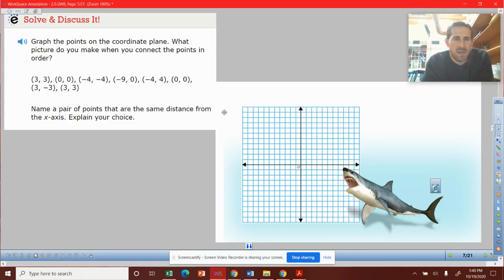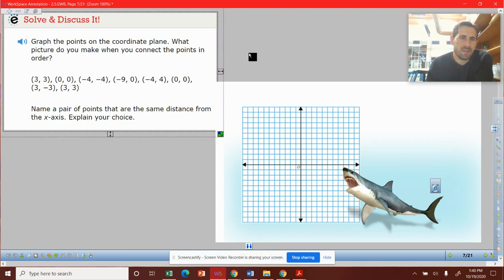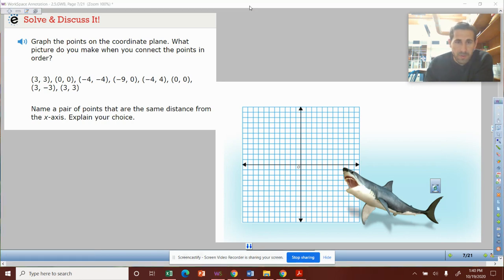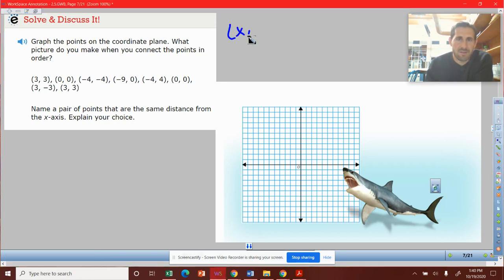It's asking us to graph the points on the coordinate plane. What picture do you make when you connect the points in order? Remember, a point goes X comma Y. X means that we're traveling left or right, and then Y means we're traveling up or down. Like reading a book, you always enter an ordered pair and work through it left to right.